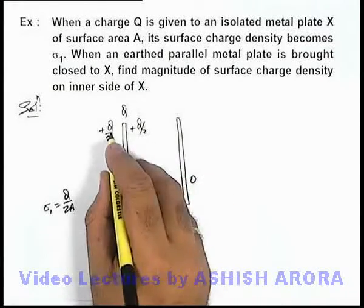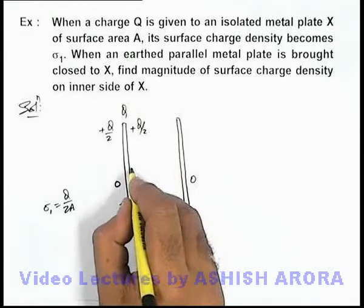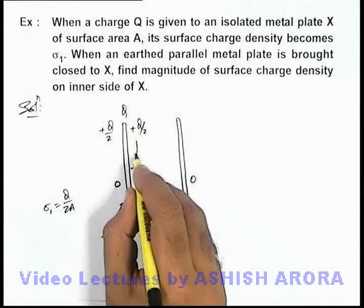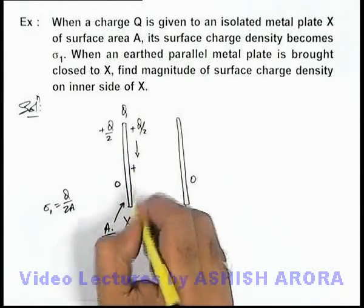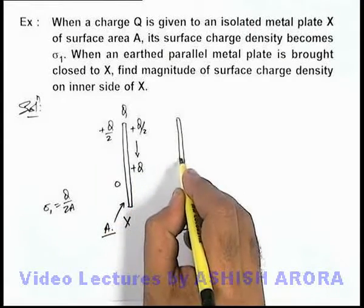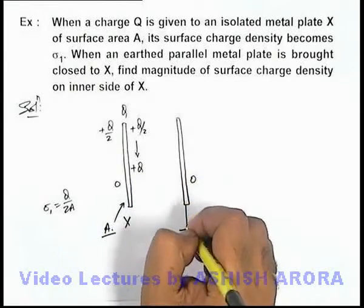On the inner side, the total charge will be pulled, so the total charge finally on the inner face of X will be +Q, and on the inner face of the earthed plate will be -Q.